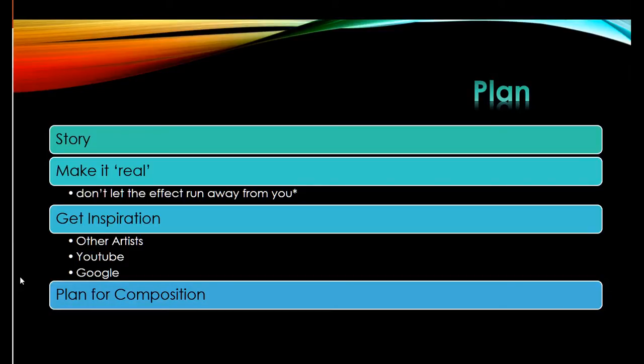Next step is planning for composition. This is when you're actually taking your images — giving yourself enough room to crop in if you need to, making sure that you're using those leading lines. Rule of thirds is always a good place to start. Generally you have your subjects looking into the image unless there's a really specific reason that's not the case.